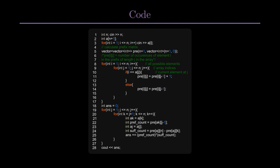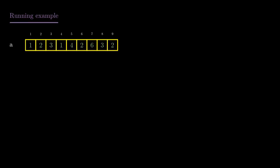Then we initialize our answer to 0 and brute force over the middle two positions j and k. For a particular pair j and k, we get the prefix count in the variable pref_count using our 2D matrix, and we get the suffix count in the variable suff_count as a difference of two prefix sums. We then multiply both of them and add their product to our answer. Finally, if you are interested, here is a full running example on a medium-sized test case.